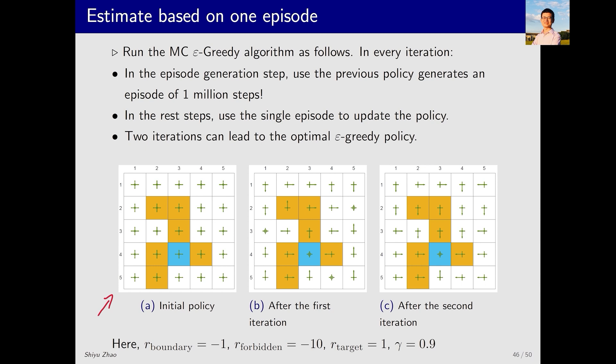Using such a policy to generate an episode of one million steps, I then updated the policy and obtained this new policy. This updated policy is still not optimal since it keeps staying still in some states. It is used to generate another one million step episode. After updating the policy again, I obtained this policy.